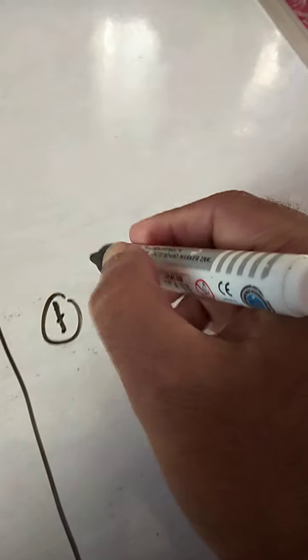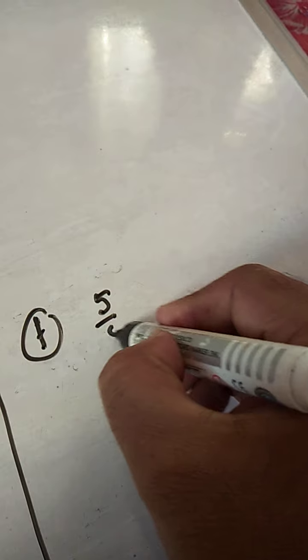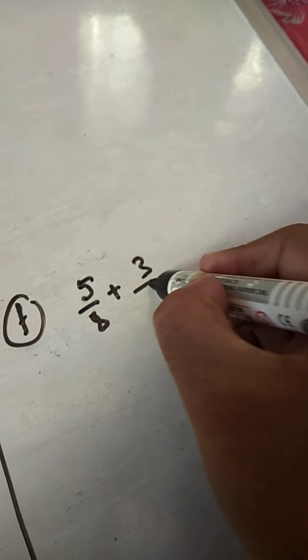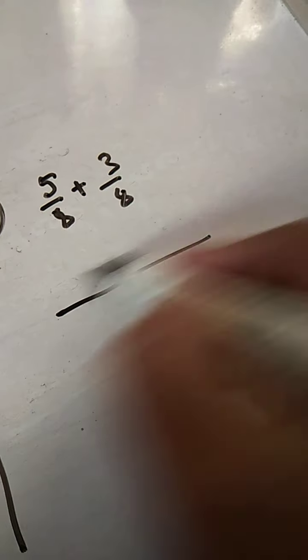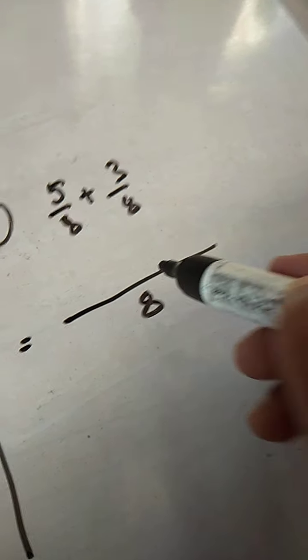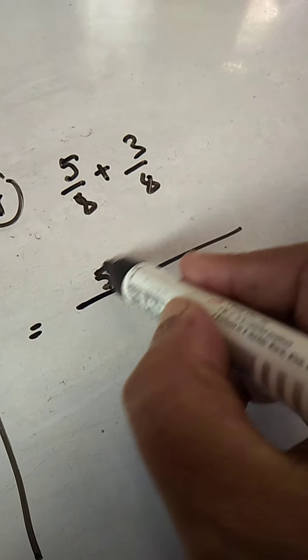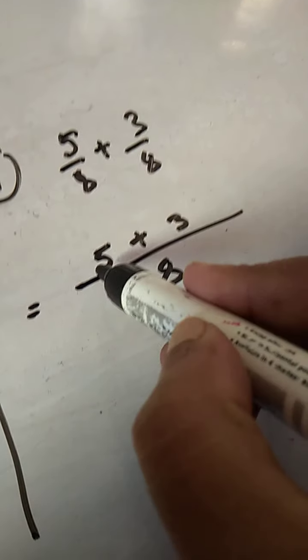So, let us move on to F. 5 by 8 plus 3 by 8. Again, these two fractions are carrying the same denominator. So, we will make a common denominator like this, 8, and we will write the numerator with plus side, that is 5 plus 3.